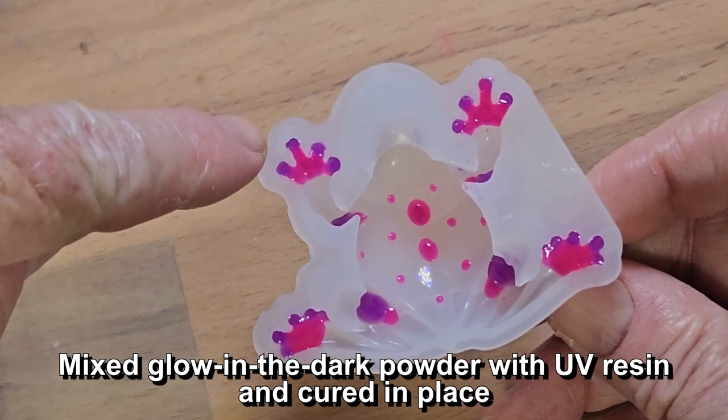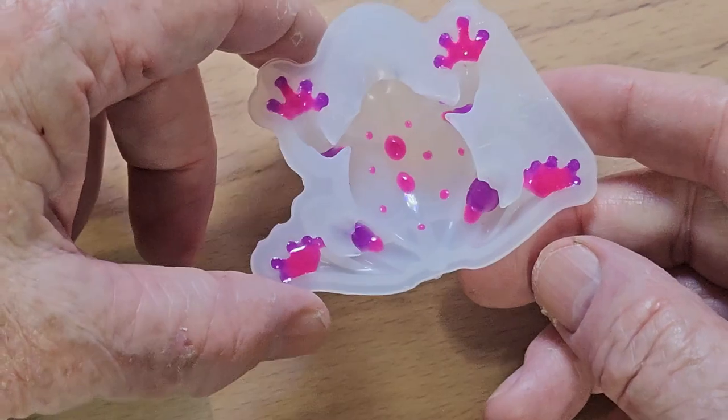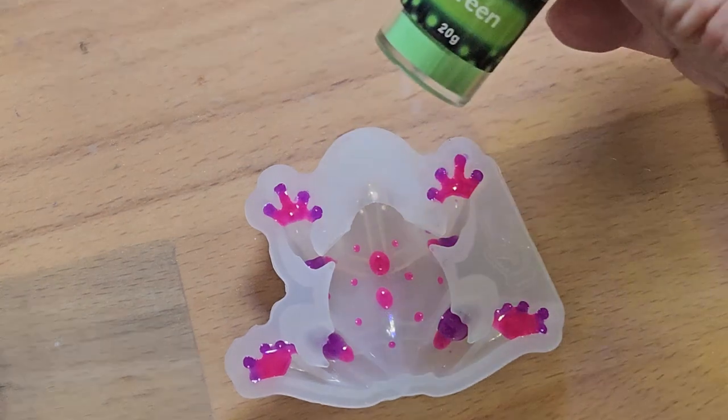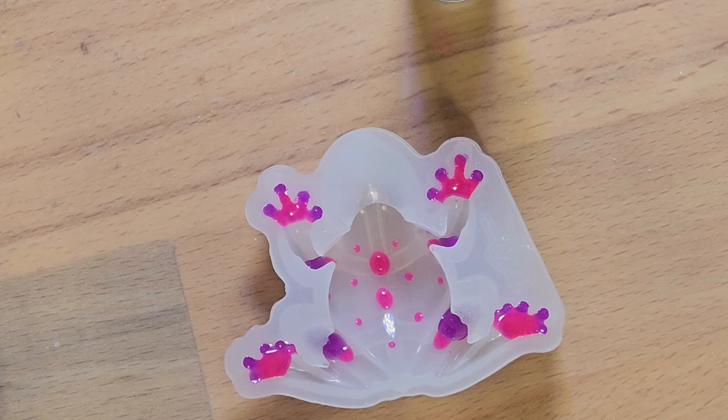His toes are purple and the feet are fuchsia, and then he's got little spots around. The rest of him is going to be this nice green, but everything is glow-in-the-dark except for his eyes. So we'll see how it turns out.